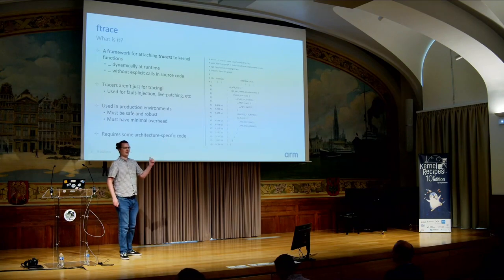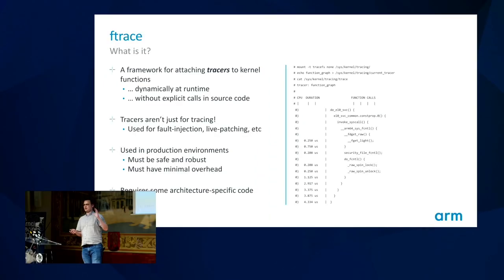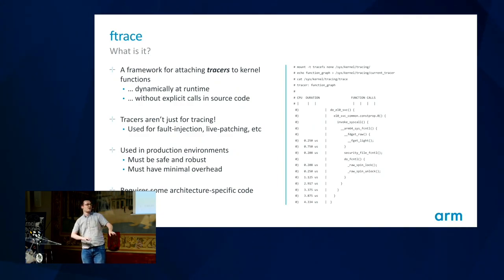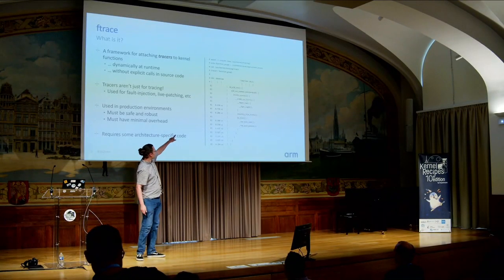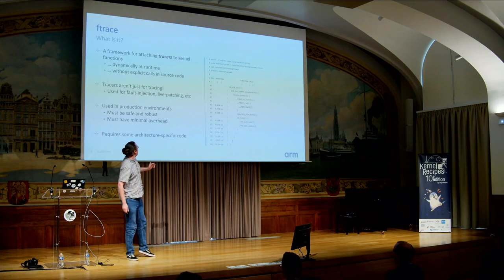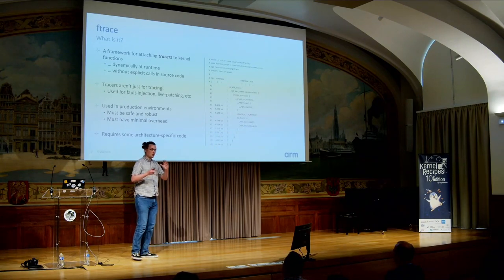First things first: what's FTrace? FTrace is a part of the kernel which allows you to attach things called tracers to kernel functions. Tracers are special functions that can gather some information and might be able to manipulate the environment. Through TraceFS, which is just a magic filesystem, I've attached a thing called the Function Graph Tracer to every function in the kernel, and I can get out a trace showing which functions called each other and how long each function call took. And I've done that dynamically at runtime without adding special hooks or altering the code.